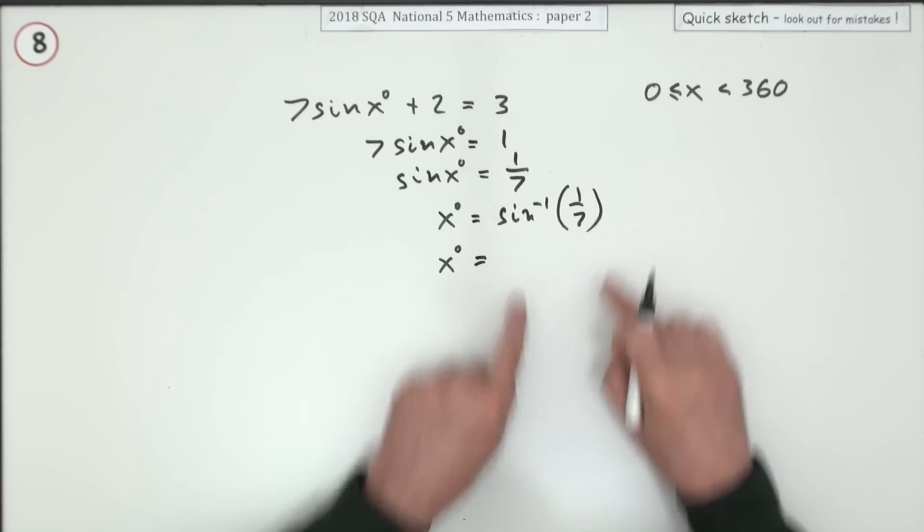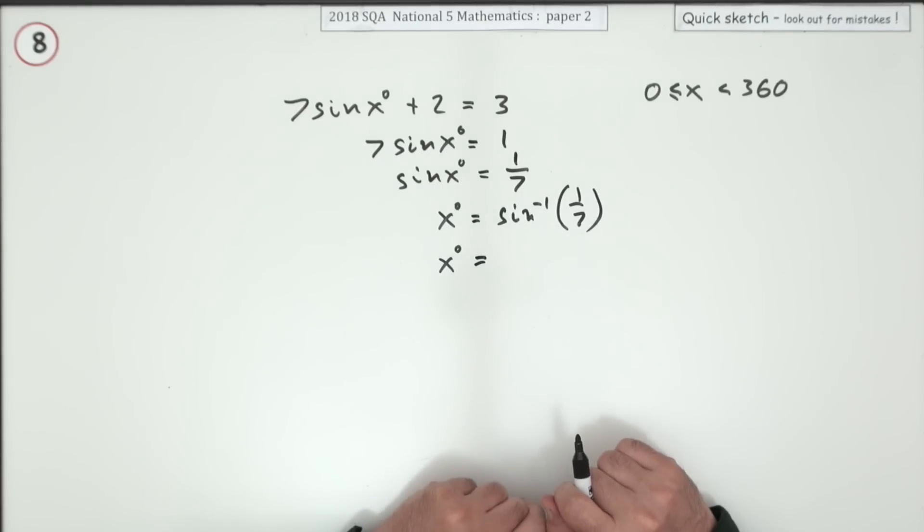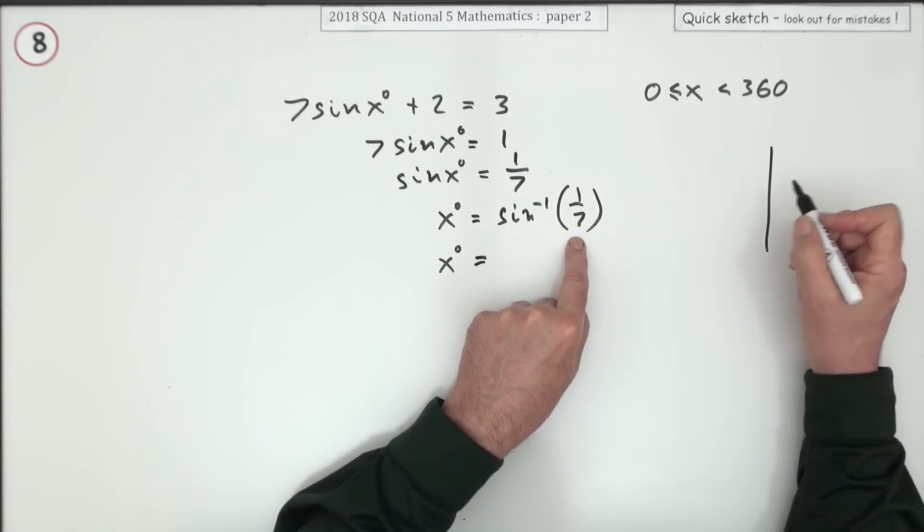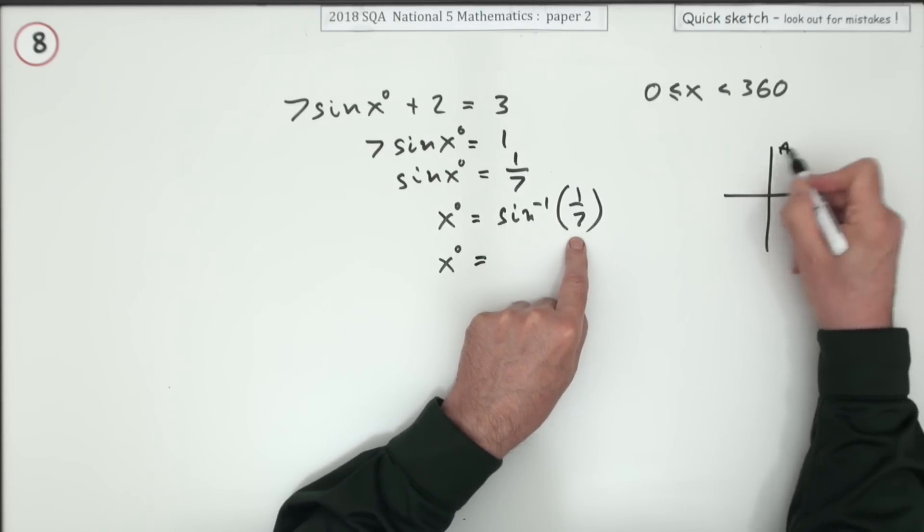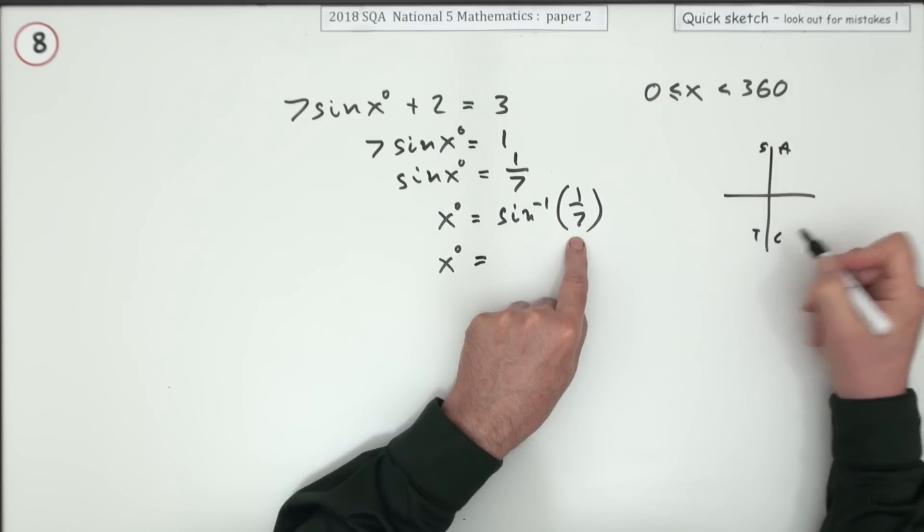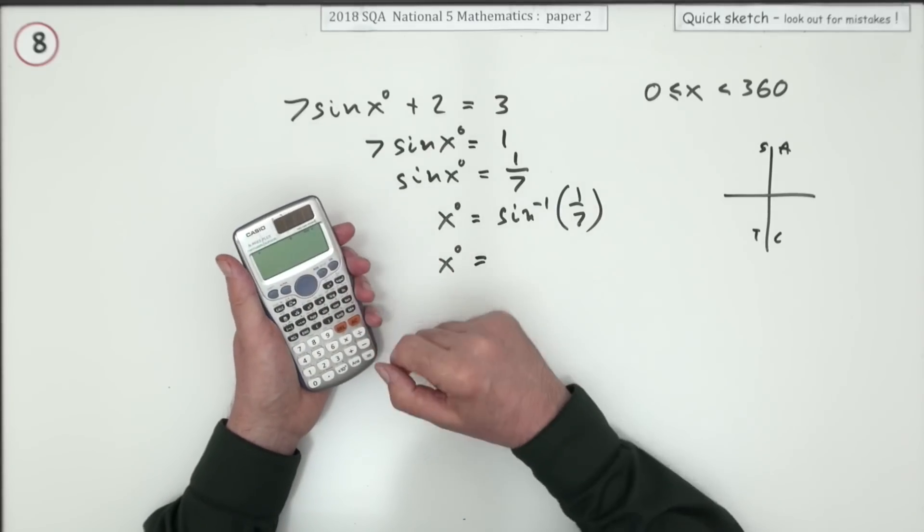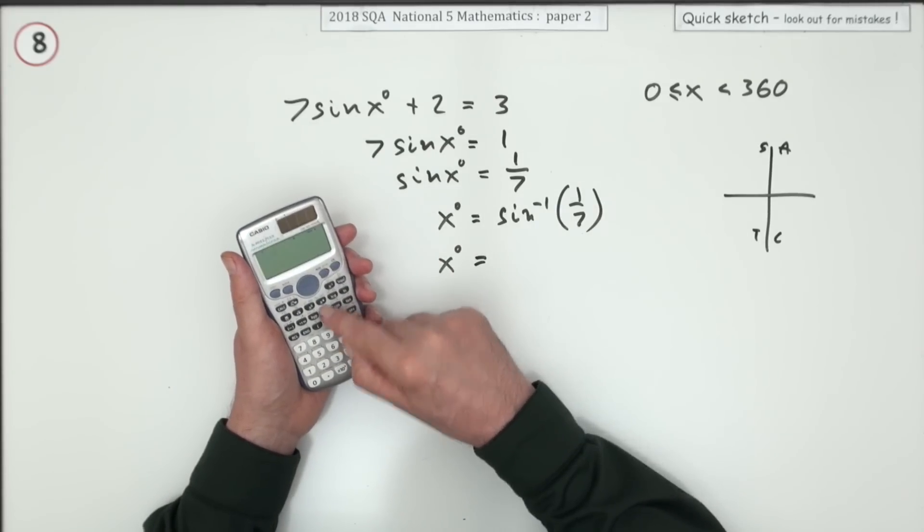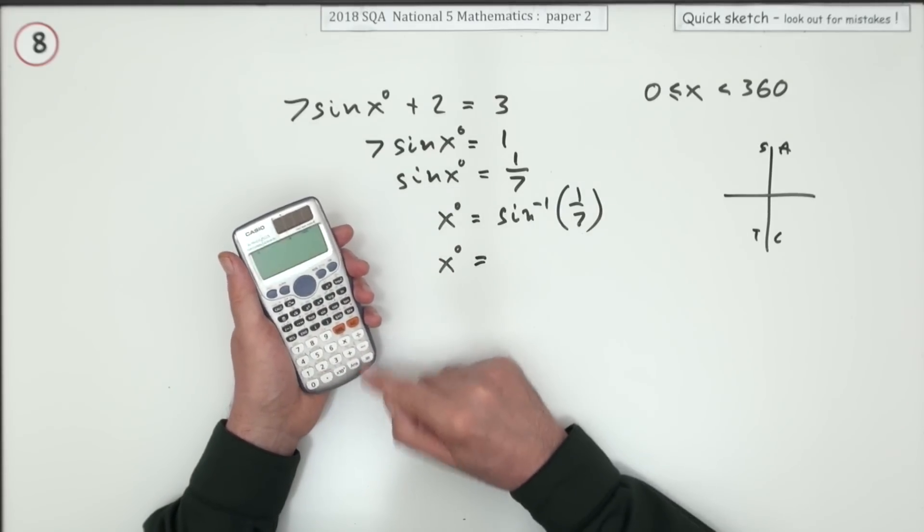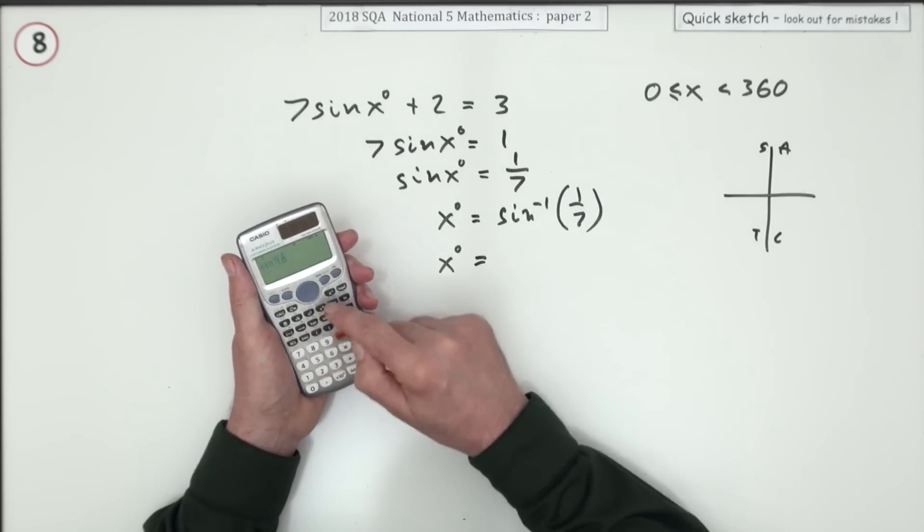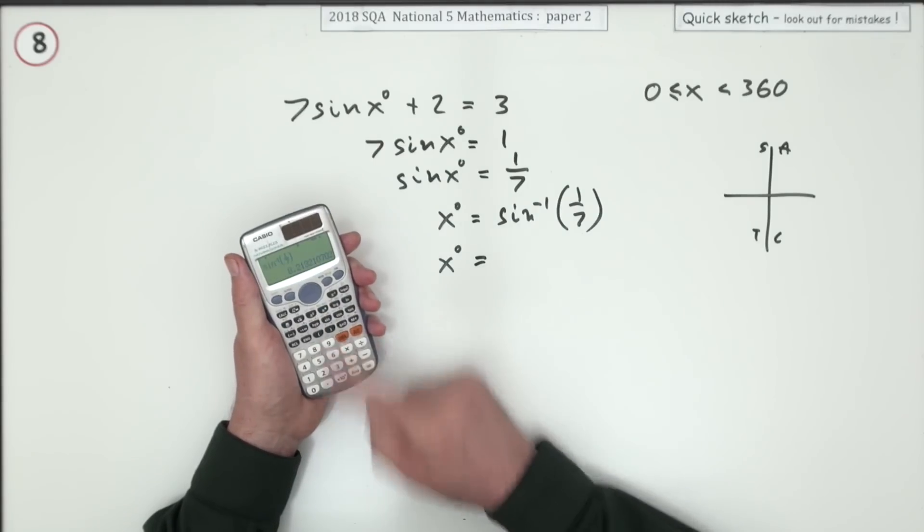And the way I'll do that is I'll use my calculator to get the angle and the CAST diagram to find where it goes. Quite often there's a wee check: I'll just quickly do sine 90 just to check it comes to one so I know I'm in degrees. Anyway, so I want inverse sine of that. And that's 8.21.